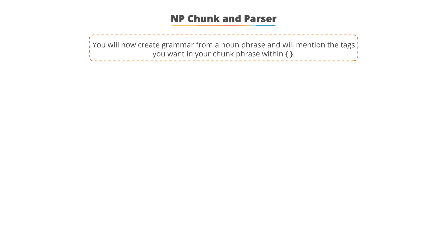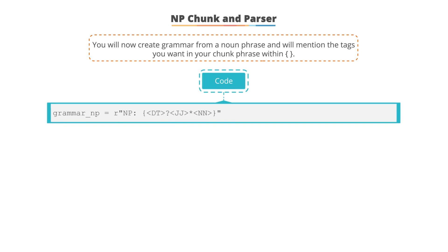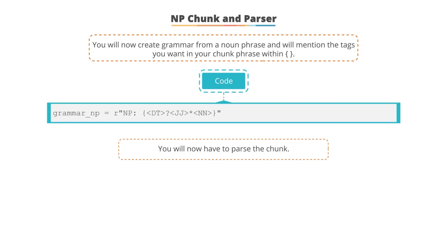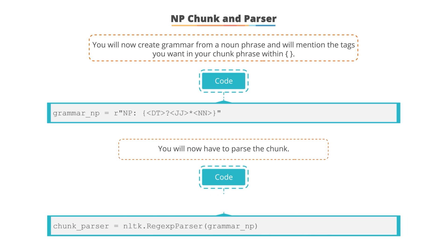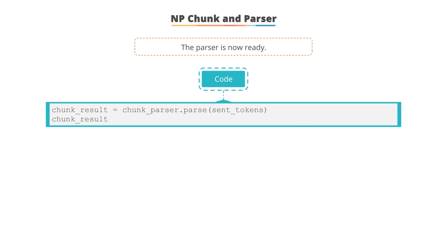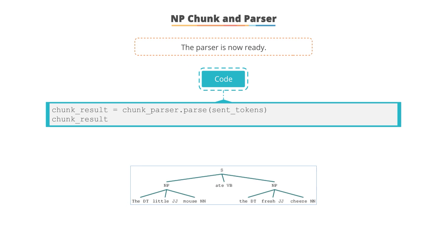We create grammar for a noun phrase and mention the tags within the function. A regular expression is defined indicating an optional determiner followed by an optional number of adjectives followed by a noun. We then create a chunk parser and pass the noun phrase string to it. Using the parse() method within the chunk parser, the sentence 'the little mouse ate the fresh cheese' is parsed, and tokens matching the regular expressions are chunked together into noun phrases (NP).